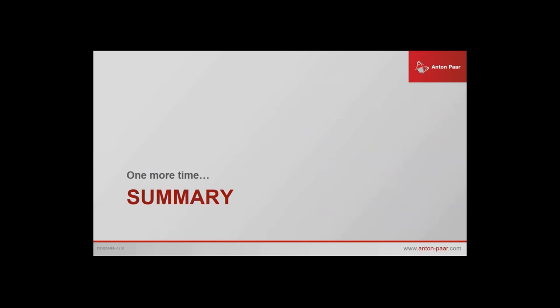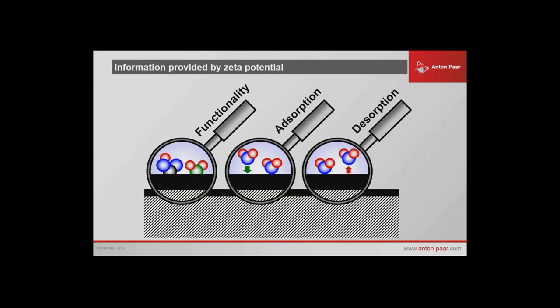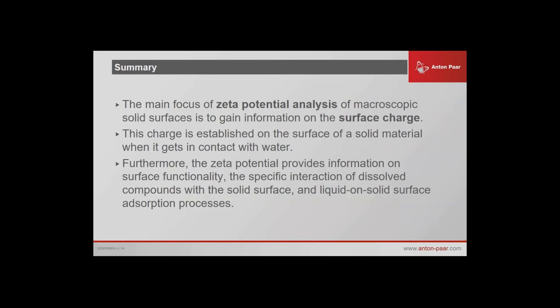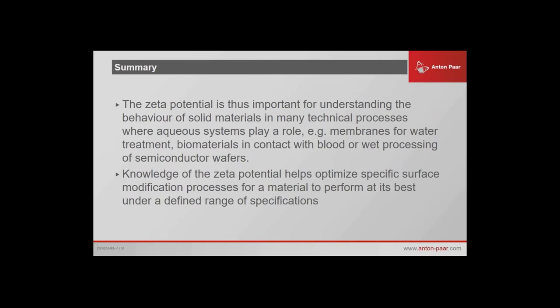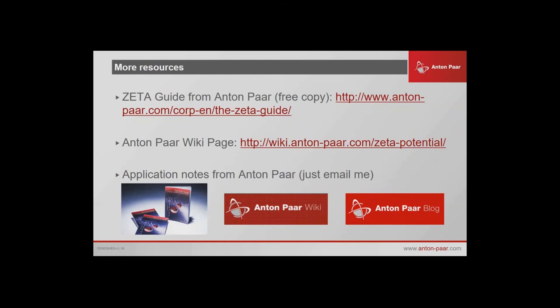Summary — exactly 40 minutes. What do you get from Zeta potential? You get information about functionality, adsorption, and desorption. Go away, think about it, and you might come up with ideas on what you could investigate. Today I've only talked about surface charge, not colloidal stuff, because that's pretty well known. It's really useful for surface modification and seeing the effects of what you've done — whether it's really worked on the surface, what kind of washout effects you have, and can you make any improvements. It's really important for membranes, water processing, and semiconductor materials. The biggest takeaway message is the quality of the water you use, the salt, and how you load the sample — that's going to affect how good your results are.